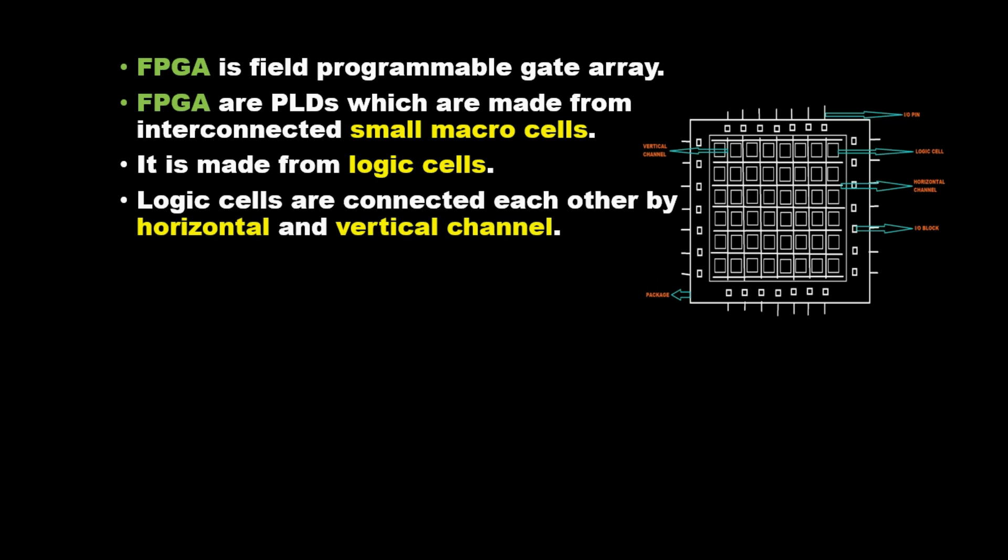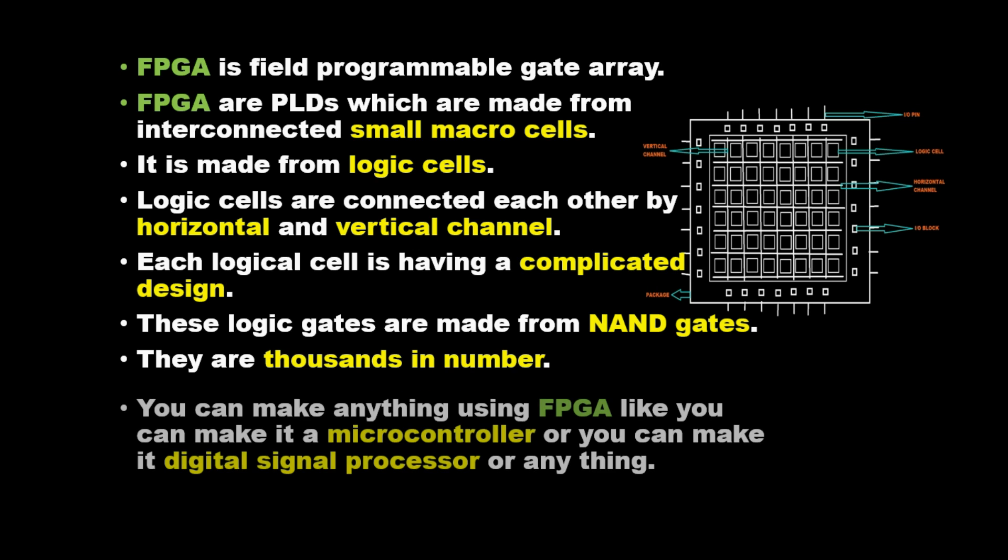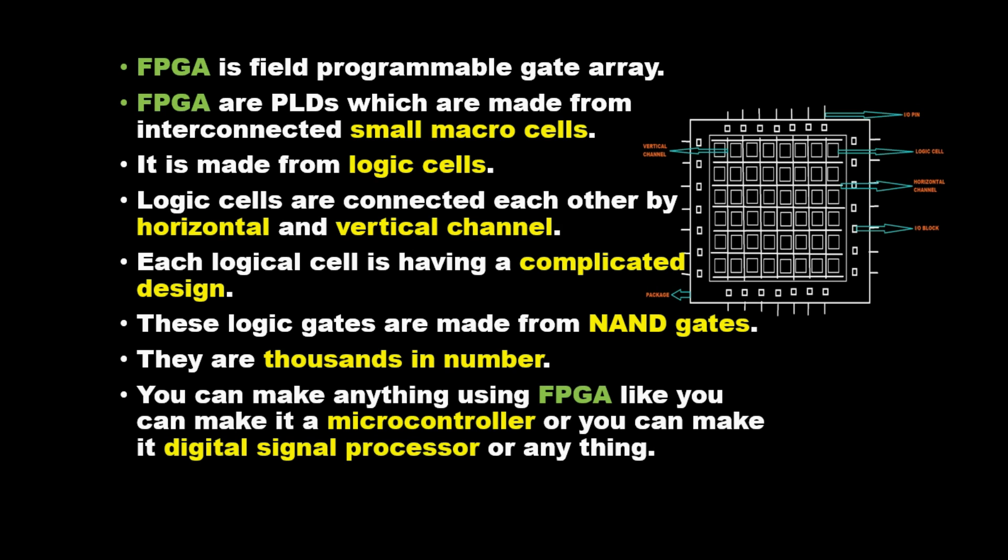Logic cells are connected to each other by horizontal and vertical channels. Each logical cell has a complicated design. These logic gates are made from NAND gates and are thousands in number. You can make anything using FPGA, like a microcontroller or digital signal processor.